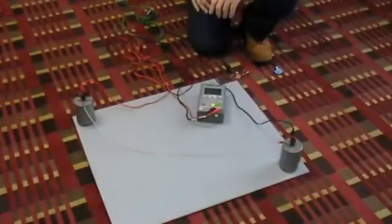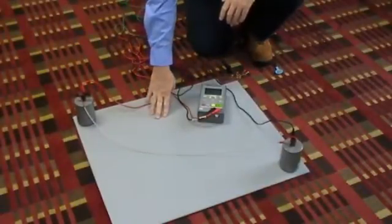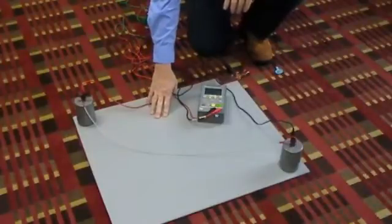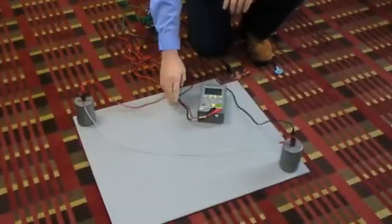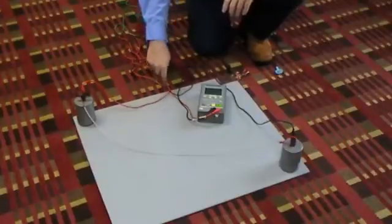Now we're going to perform the second part of the test, which is a groundable point on the floor to ground, and run the test voltage through the meter, through the floor, and back to ground.